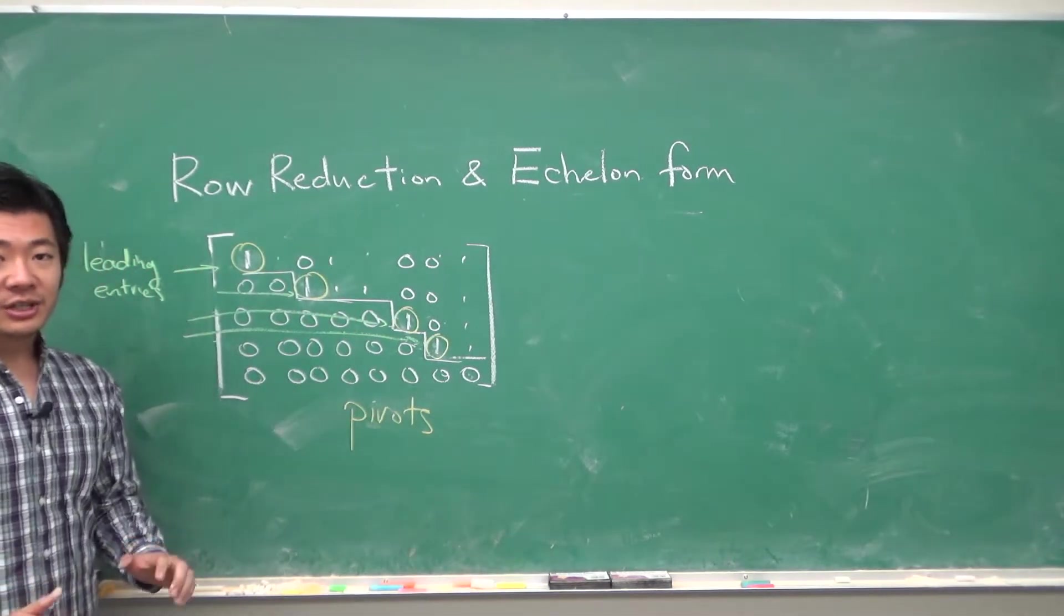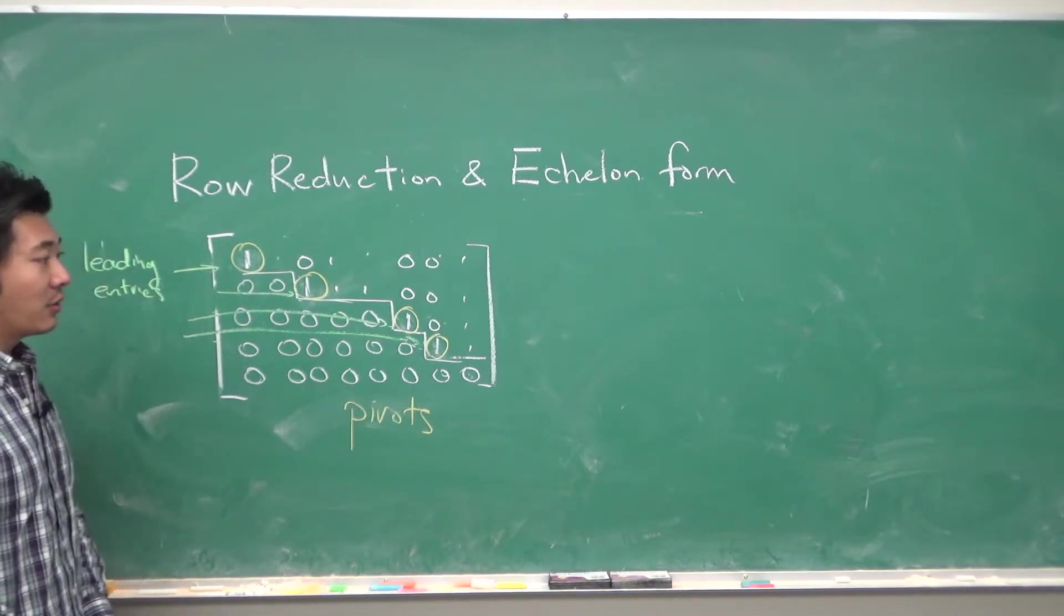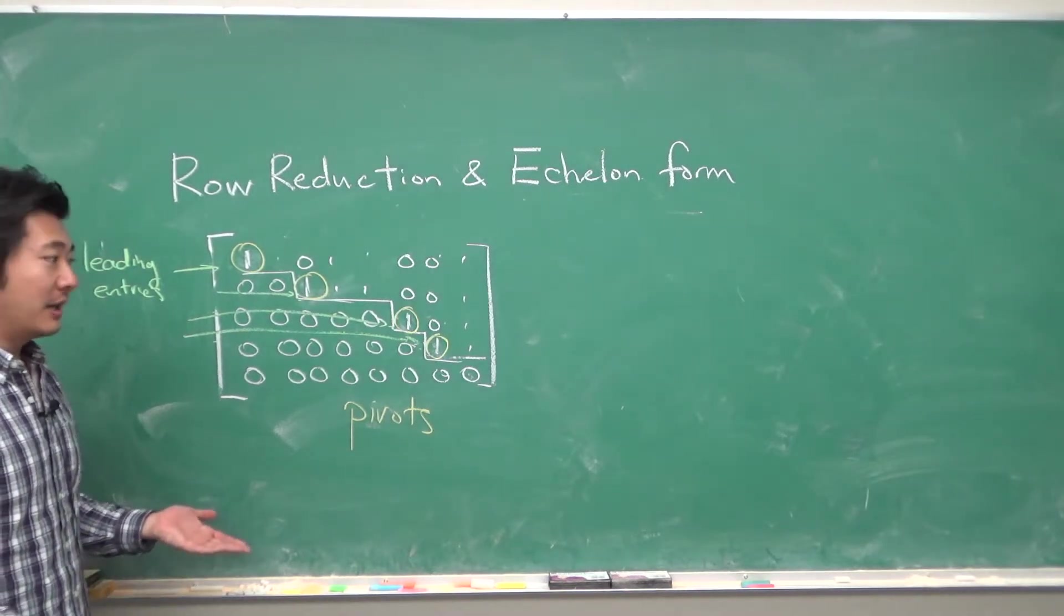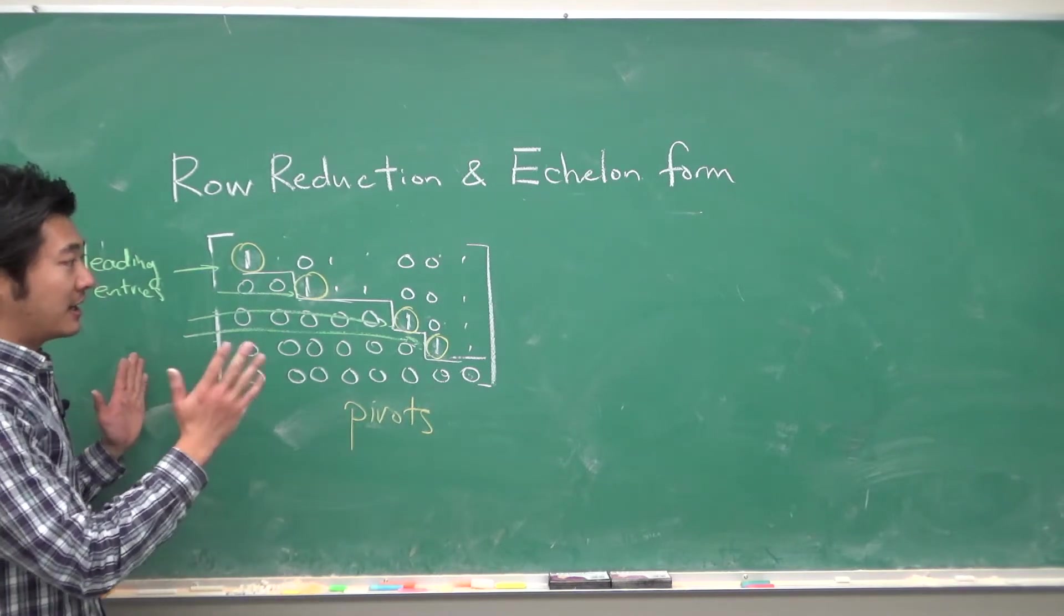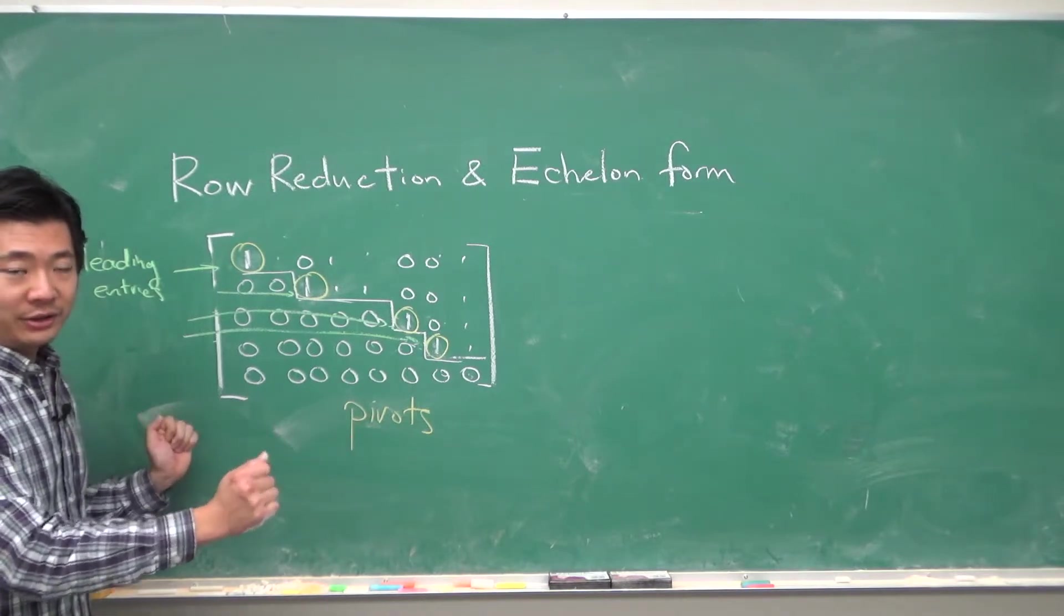Having a matrix in reduced row echelon form is very nice, because once we need to solve for the variables in our linear system of equations, then they are nice and easy to solve. So we will see how to convert something that is in reduced row echelon form into a solution set of a linear equation.